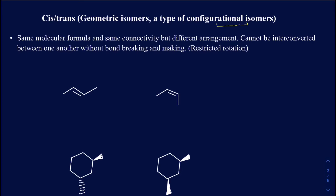If it's an isomer, it's got to have the same formula, and geometric isomers will have the same connectivity. However, they will have a different spatial arrangement, and those spatial arrangements cannot be interconverted through bond rotation — that's because of the restricted rotation in those particular compounds. The restriction on rotation comes through the double bond, if there is a double bond, or if there is a ring. If there is a double bond, you can't rotate it freely like you would for a single bond, and if there is a ring, you can't rotate it because of the restriction around the ring.